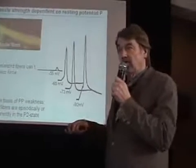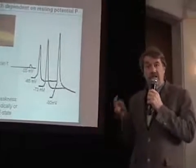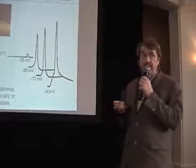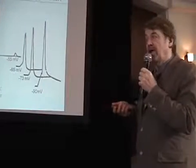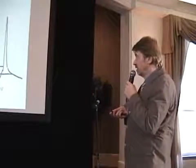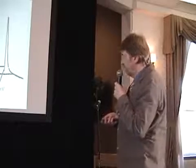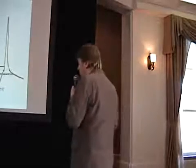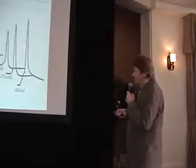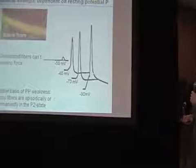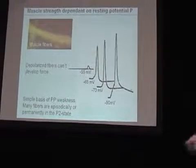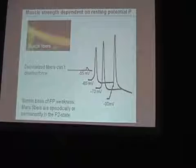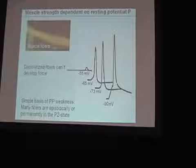That means these fibers are paralyzed. Why normal muscle fibers also show a small fraction of depolarized fibers is unclear. But for patients with periodic paralysis, it is very important to see that we can easily explain paralysis of muscle fibers by measuring the membrane potential — the basic value of the muscle fibers. You can imagine that if all muscle fibers are depolarized to this membrane potential, the individual will be completely paralyzed.